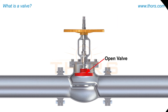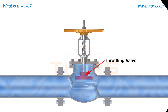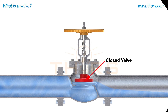When the valve is open, the fluid passes through the valve. A throttling valve can be used to regulate the amount of flow through the valve. When the valve is closed, the fluid is stopped from passing through the valve completely.